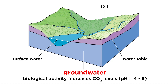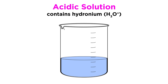Furthermore, biological activity in the shallow subsurface releases additional CO2 that gets dissolved in the groundwater, further decreasing its pH to around 4 or 5. As we know from learning about acids and bases, acidic solutions have a surplus of hydronium ions. It is these ions that react with minerals to break them down.